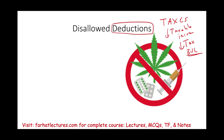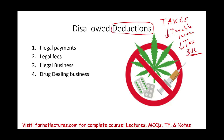But there are certain deductions that are considered against public policy. These include: illegal payments, legal fees, illegal business, drug dealing business, and political contributions and lobbying expenditures. Each one will need to be discussed separately to explain why and under what circumstances that deduction is allowed. Generally speaking, those are disallowed deductions unless there is a specific exception.